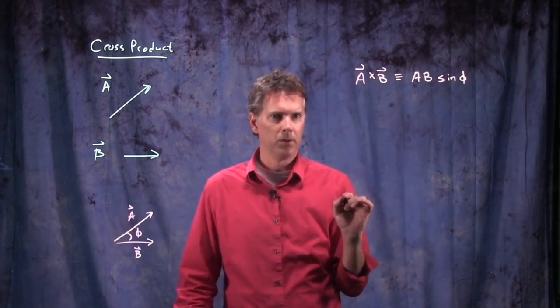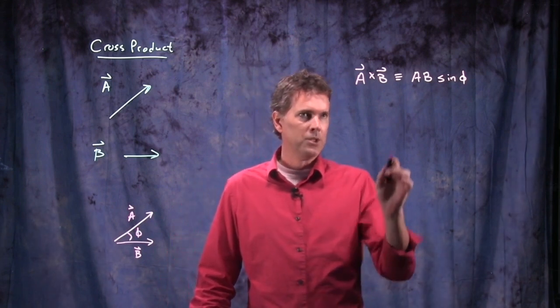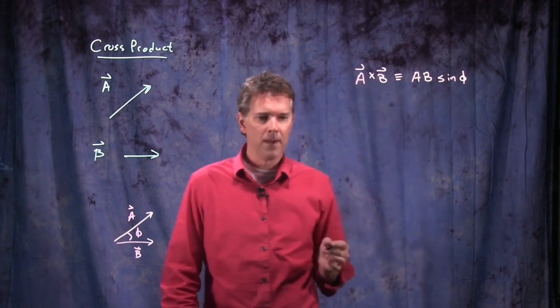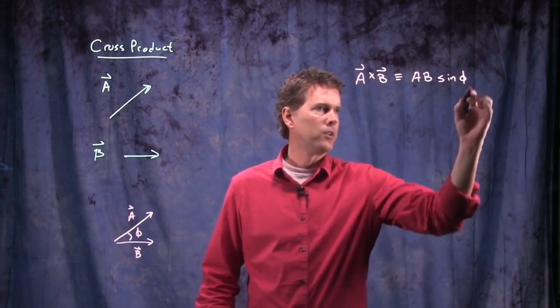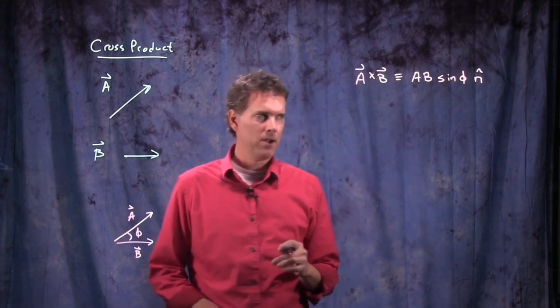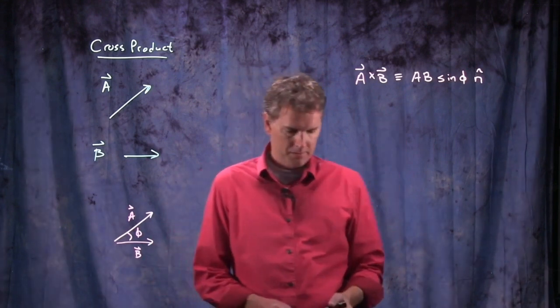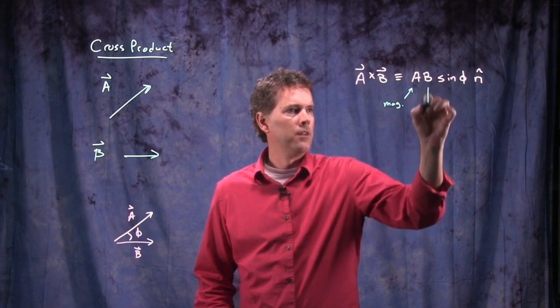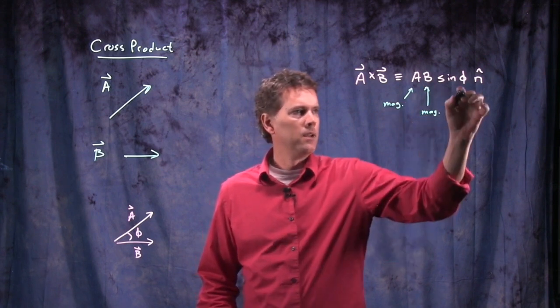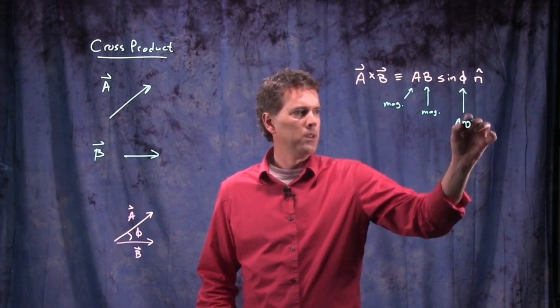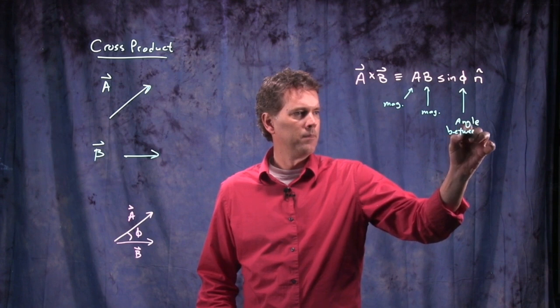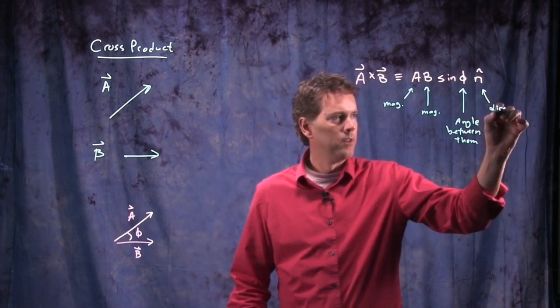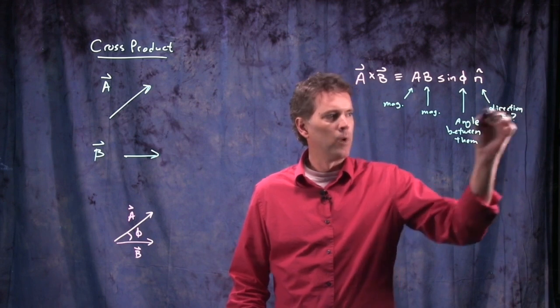Now it's the sine of the angle between them, but there's one more thing that's really important here, which is, cross product is a vector quantity. This, that we've written so far, is just a magnitude, and so we need to identify a direction, and so for the direction, we do an n hat right there. This is, of course, the magnitude of vector A. This is the magnitude of vector B. This is the angle between them, and this is the resultant direction, which we need to figure out from something called the right-hand rule.